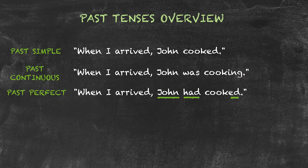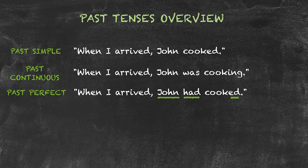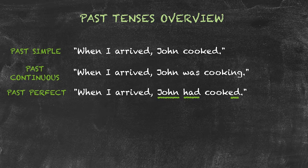Past perfect is used to express the past in the past. In other words, an action that happened before another past action. When I arrived, John had cooked. I arrived in the past, and I want to say what happened before that past time, so I have to use the past perfect.